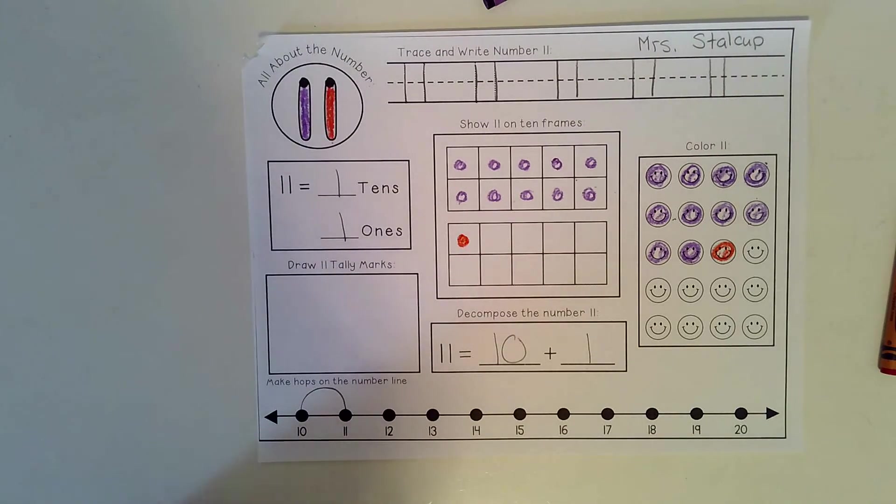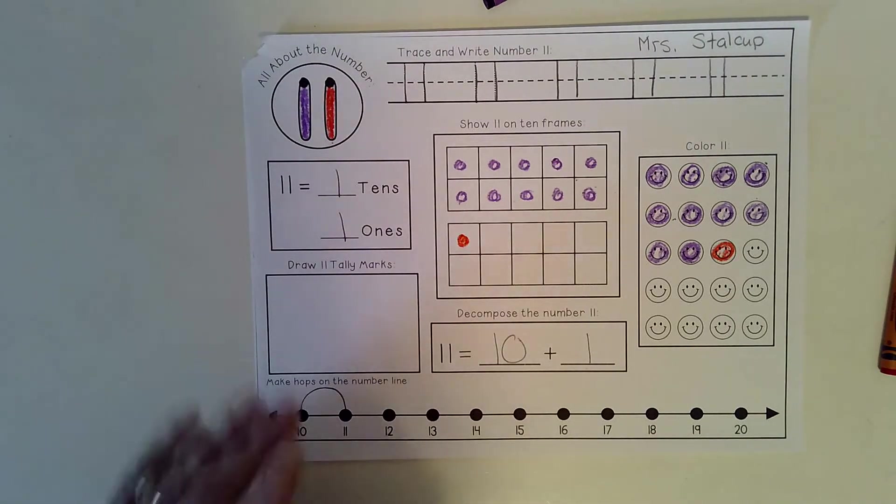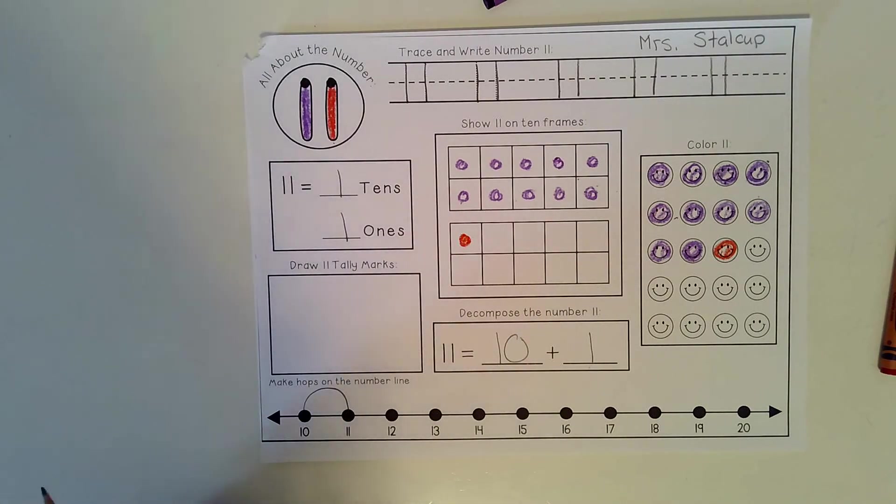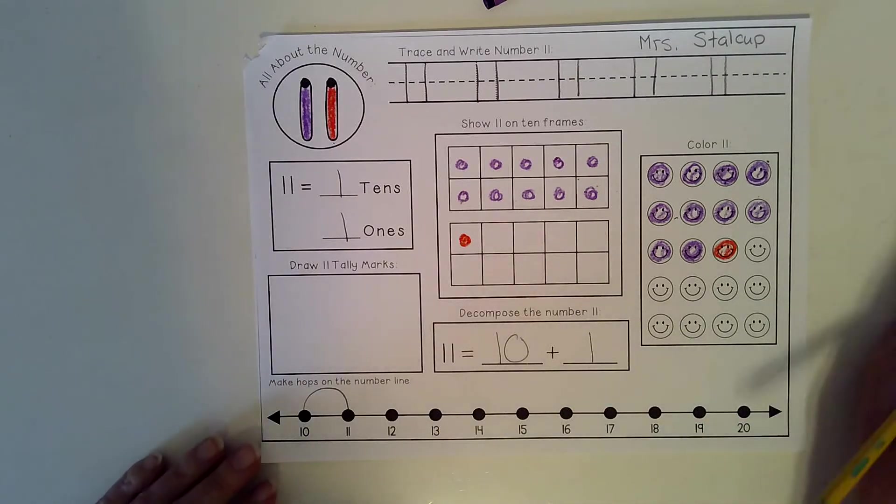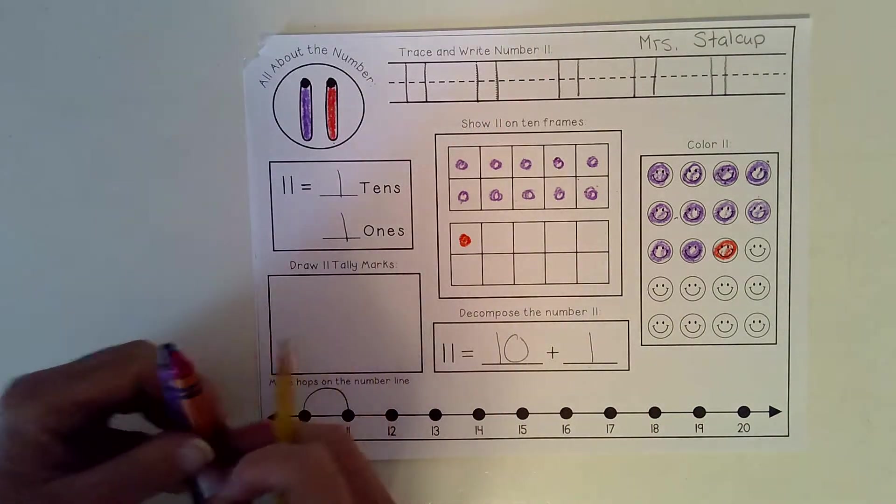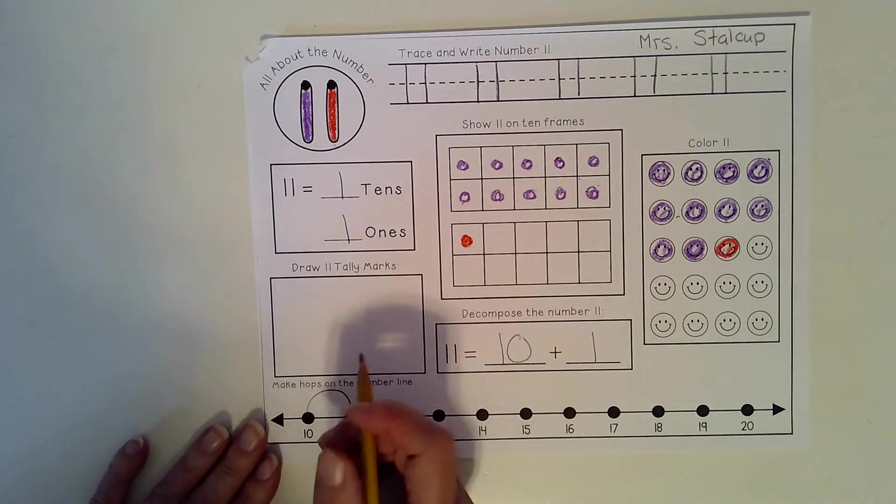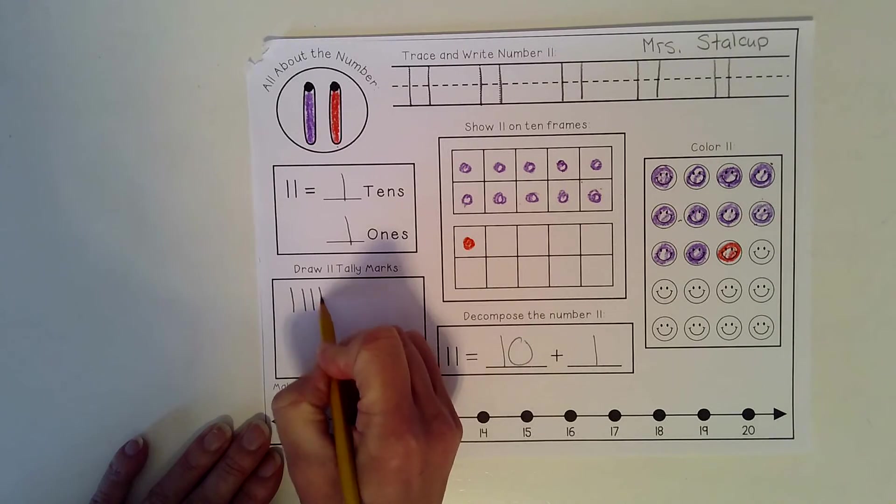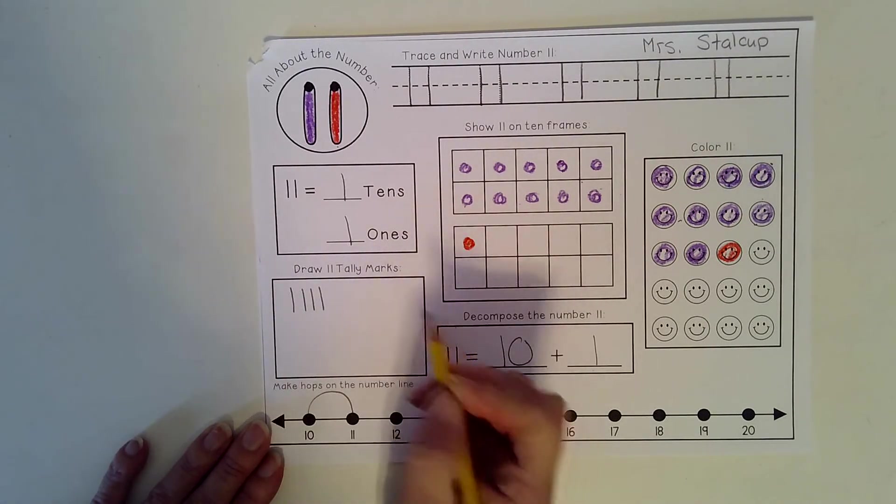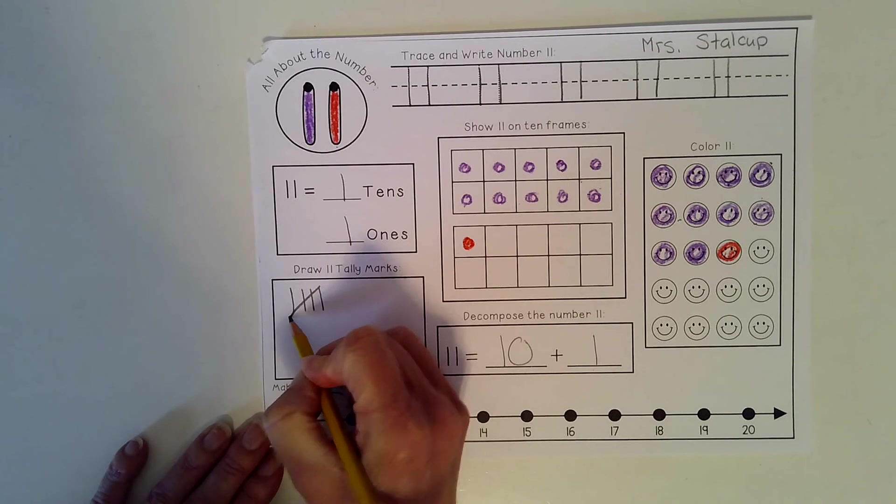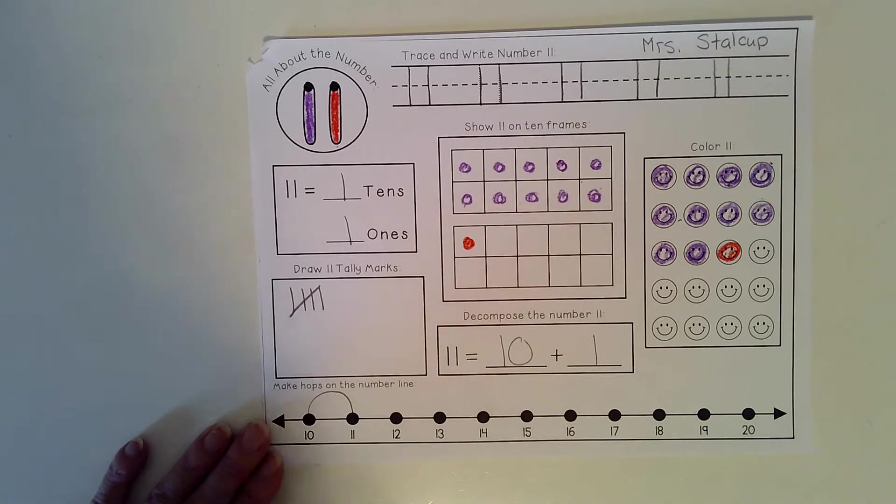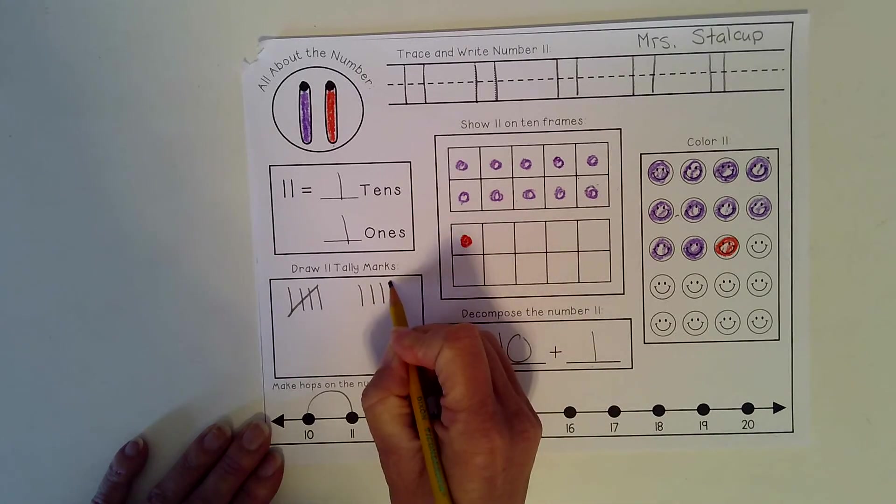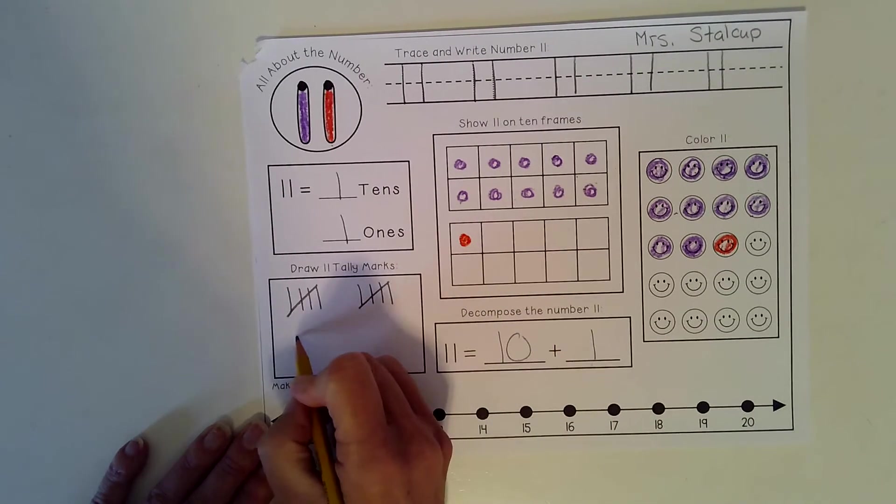And the last thing we are going to do on this side is we're going to do 10 tally marks. Now, you haven't done tally marks with Mrs. Stalkup before, so I don't know if you know how to do them. So we'll do them together. Watch me with the tally marks. So we go like this: 1, 2, 3, 4. And then when we get to 5, we slash it. 5, 6, 7, 8, 9, 10, 11.